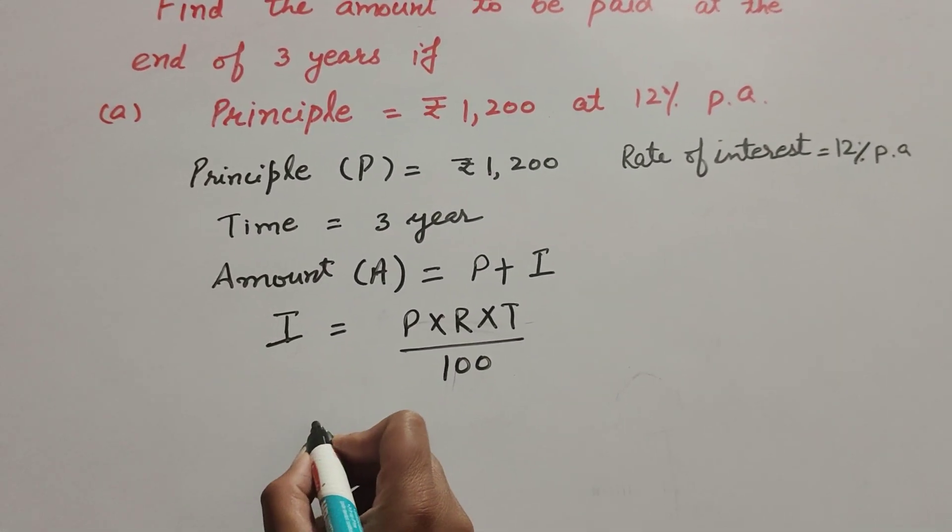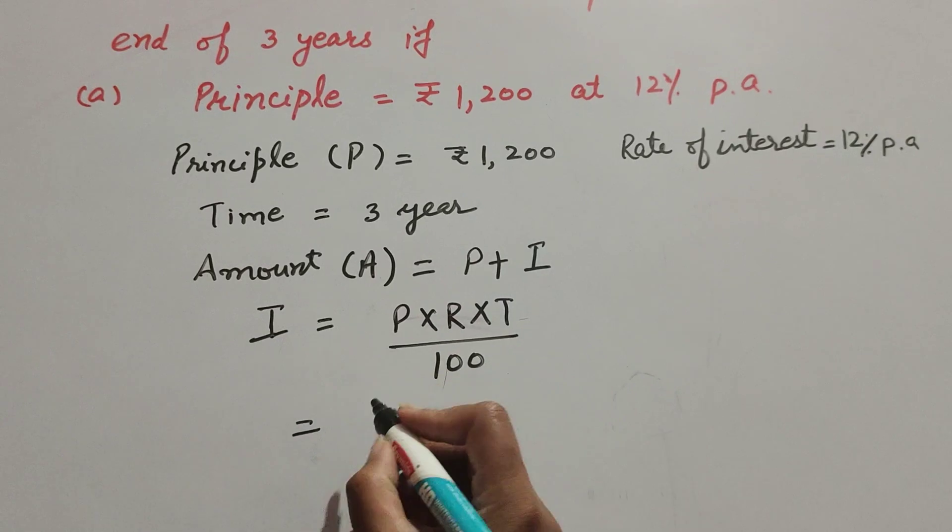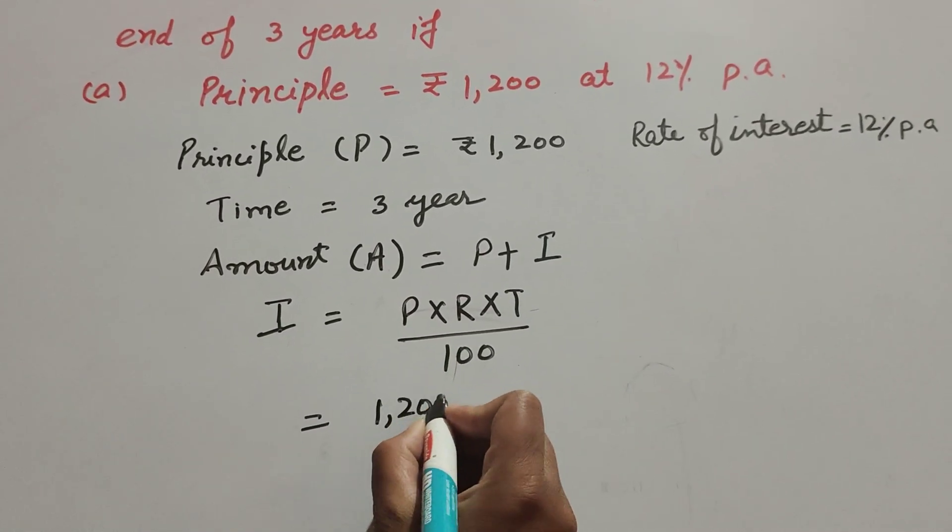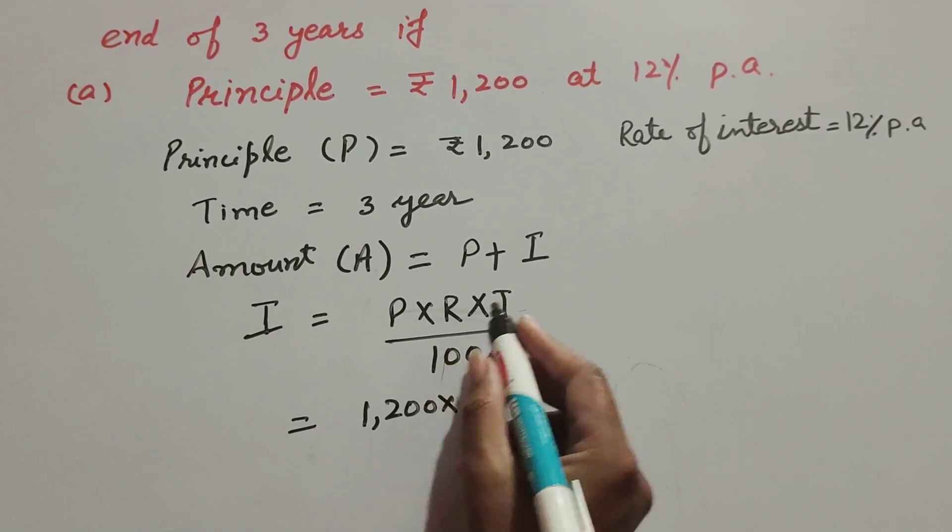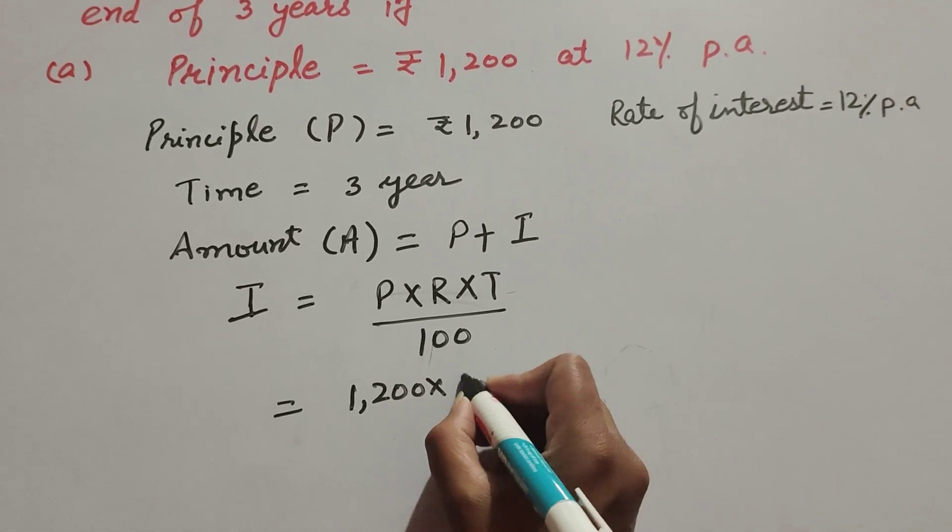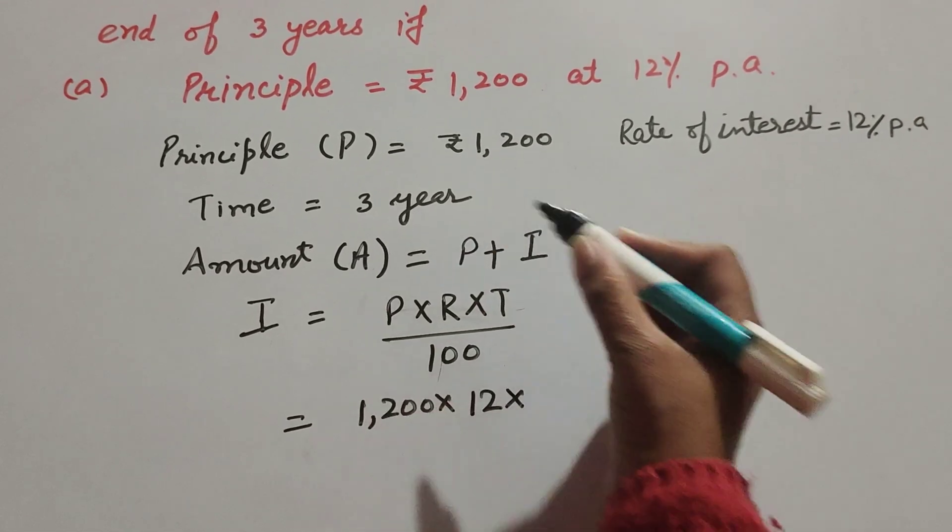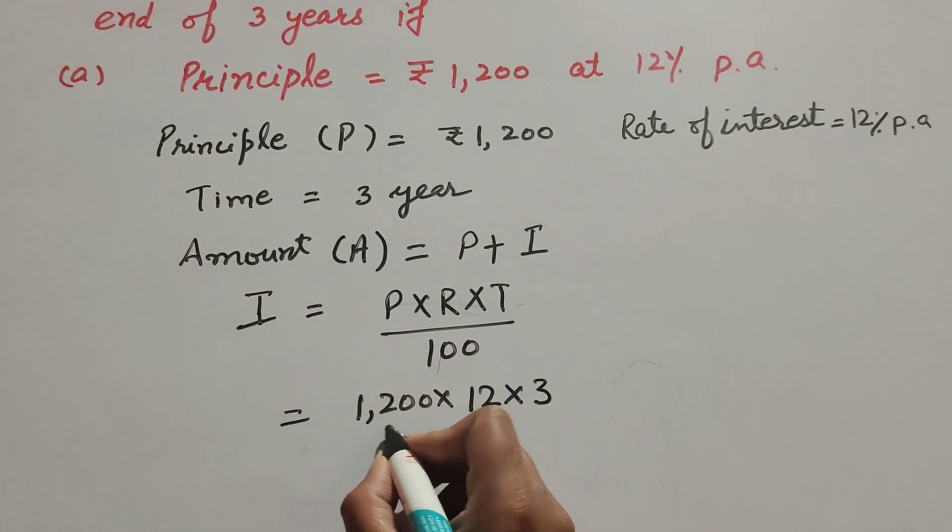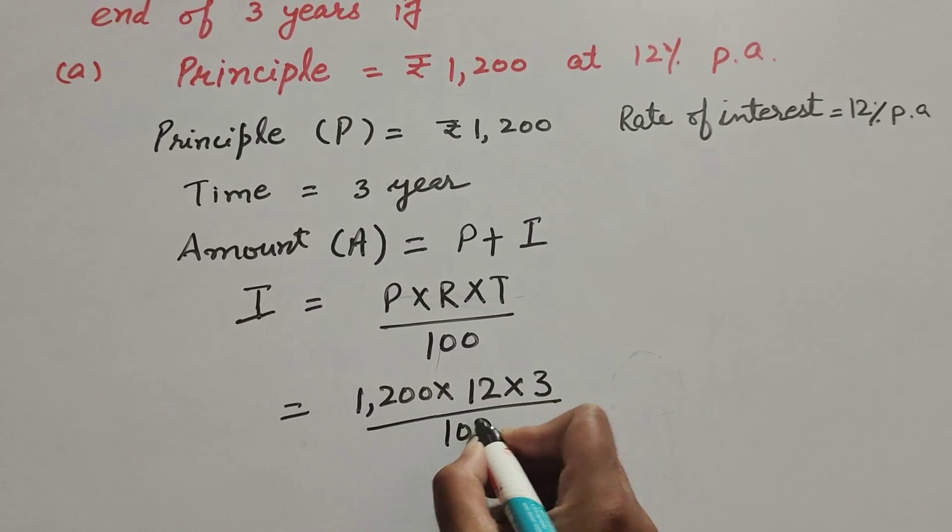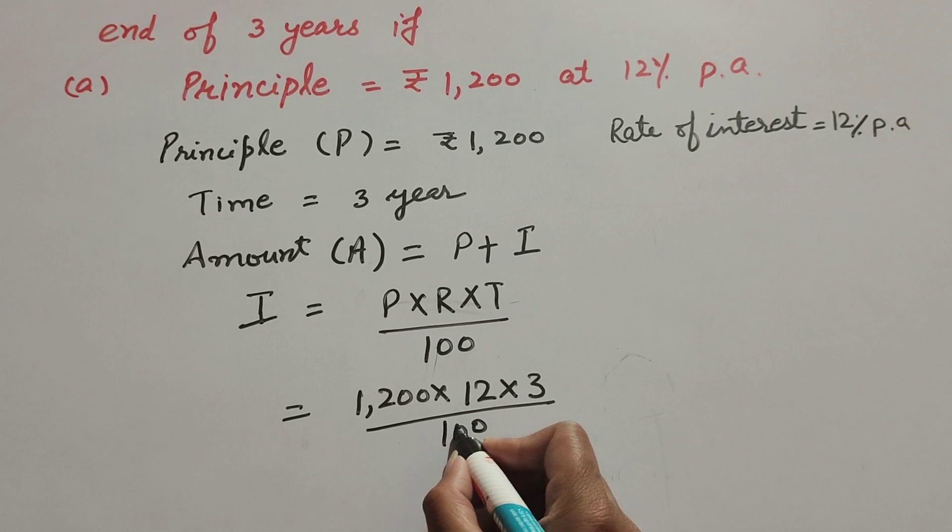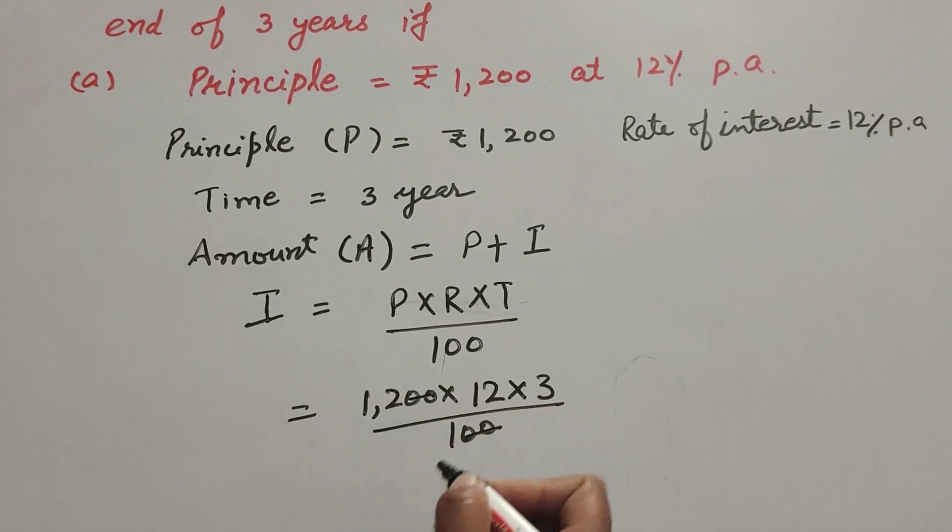Principal is equal to 1,200 multiply R. R is rate of interest, it is equal to 12, multiply 12, multiply T. T is time, it is 3 over 100. Now 20 in denominator and 20 in numerator both are cancelled.